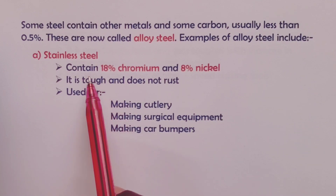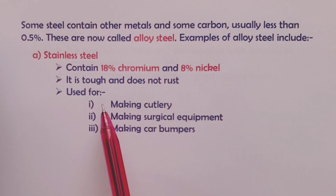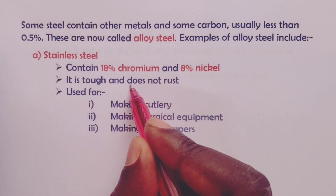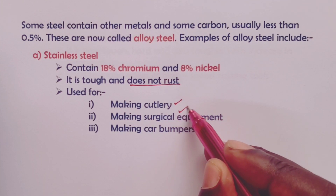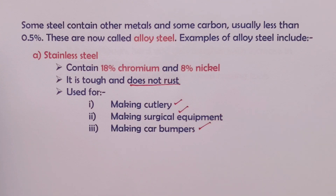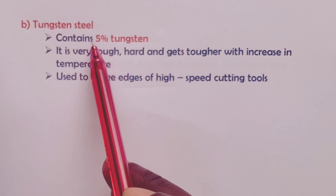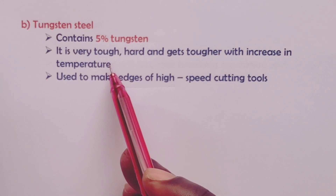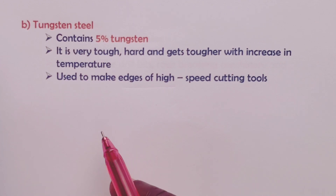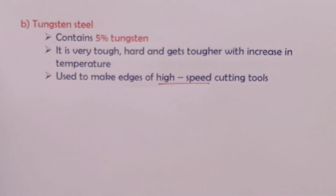Stainless steel contains 18% chromium and another 8% nickel. It is tough, and most importantly, it does not rust. We therefore use it to make cutlery, surgical equipment, and car bumpers. The next alloy steel is tungsten steel, which contains 5% tungsten. Tungsten steel is very tough, hard, and gets tougher as temperatures increase. It is used to make high-speed cutting tools, which get hotter as the cutting process continues.